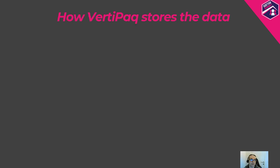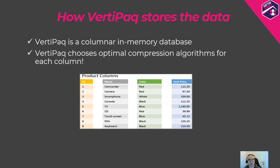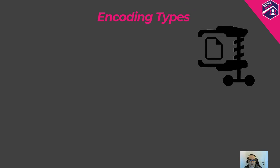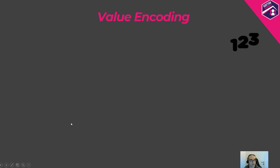How does VertiPaq store the data? Two main characteristics: VertiPaq is a columnar, in-memory database. VertiPaq applies different types of compression to each column independently, choosing the optimal compression algorithm based on the values in that specific column. Compression is achieved by encoding the values within the column. This architecture is not exclusively related to Power BI — in the background is a tabular model which also works under the hood of Analysis Services Tabular and Excel Power Pivot. The encoding types VertiPaq applies are: value encoding, hash encoding (or dictionary encoding), and run-length encoding (RLE).